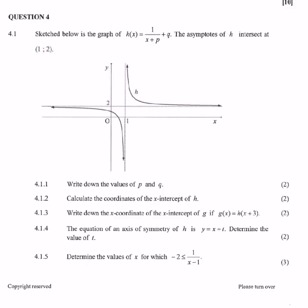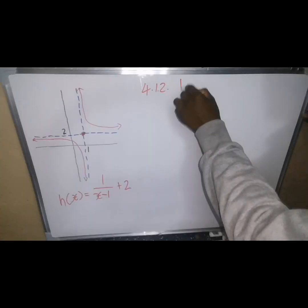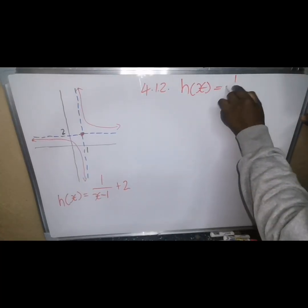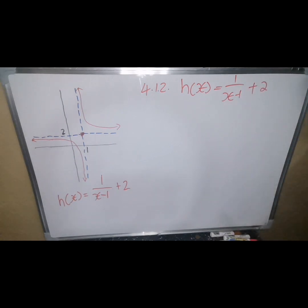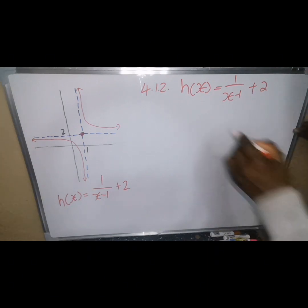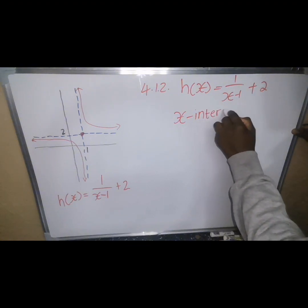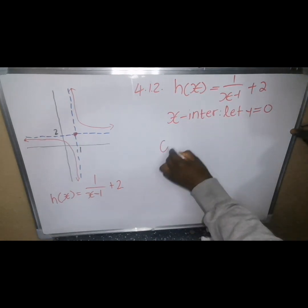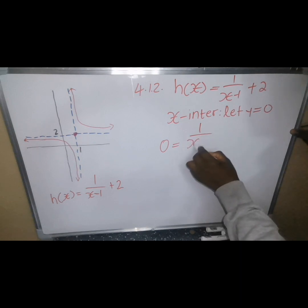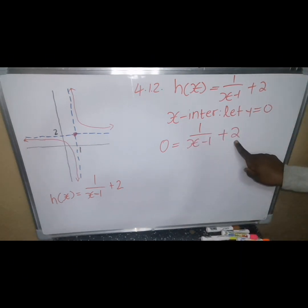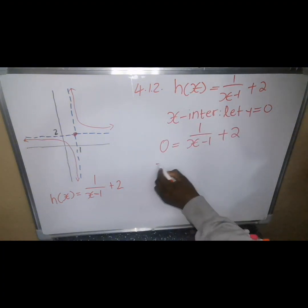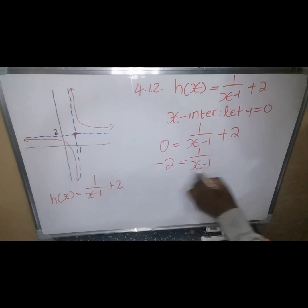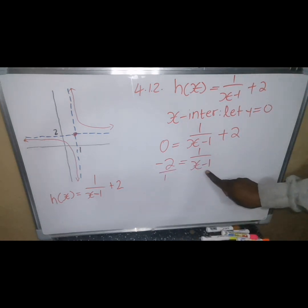Question 4.1.2 asks us to calculate the coordinates of the x-intercept of h. Our function is h(x) = 1/(x − 1) + 2. To find the x-intercept, we let y equal zero and solve for x. Setting zero equal to 1/(x − 1) + 2, we transpose 2 to the left: negative 2 equals 1/(x − 1).